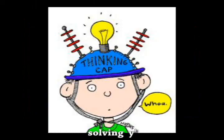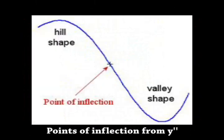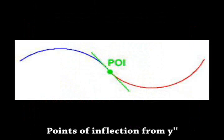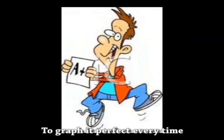Zeros tell you where we cross the x-axis. Solving y-prime, finding mins and maxes. Points of inflection from y double prime. That's all you need, do graphing perfect every time.